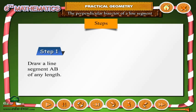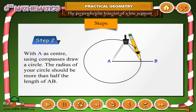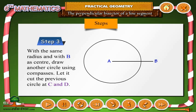Step 1: Draw a line segment AB of any length. Step 2: With A as center, using compasses, draw a circle. The radius of your circle should be more than half the length of AB.